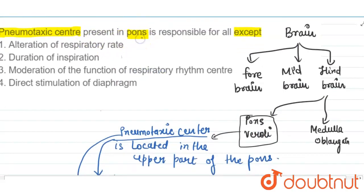Pneumotoxic center present in pons, upper part of the pons, is responsible for alteration of respiratory rate because we inspirate and expirate, which is all regulated by pneumotoxic center. Duration of inspiration is also regulated by pneumotoxic center, and moderation of the function of respiratory rhythm center. We inspirate, we expirate, so all are moderated by function of respiratory rhythm center.